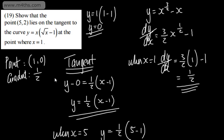So there we go — 4 exam questions that varied in terms of difficulty. In an exam you might have a multi-step question, but generally these might be all of it or part of a question. They might also be structured, with one part asking to find the tangent and another to show that a point lies on it. These questions have encompassed most of the types of things you would be expected to answer in exam-style differentiation questions.